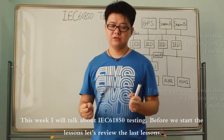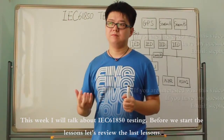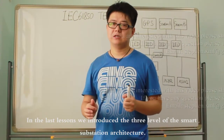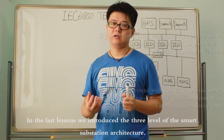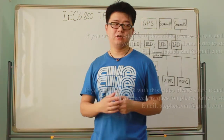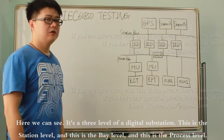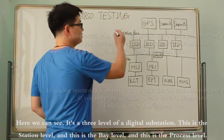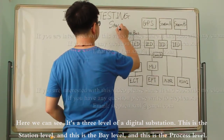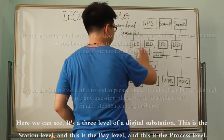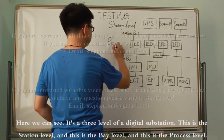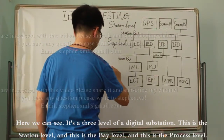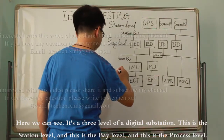Before we start the lessons, let's review the last lessons. In the last lessons, we introduced the three levels of the smart substation architecture. We can see it's the three levels of digital substation: the station level, the bay level, and the process level.